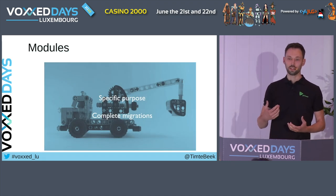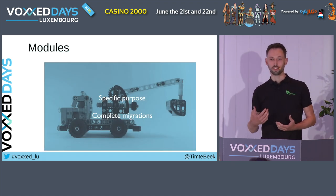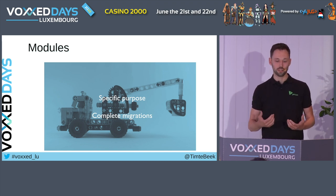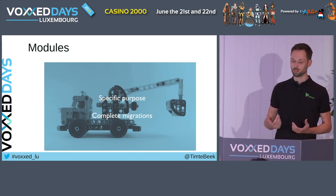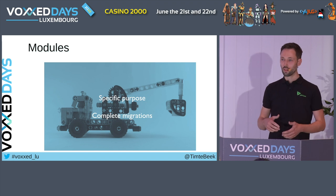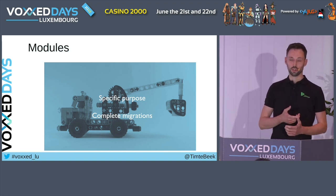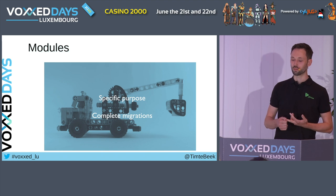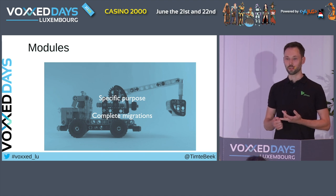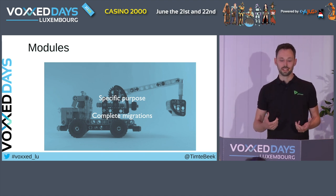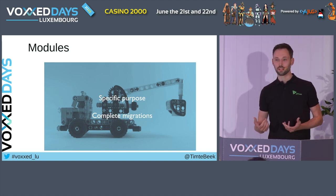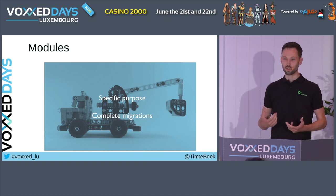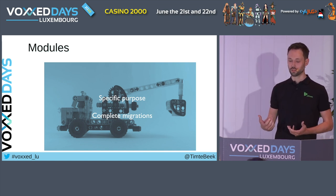Modules combine and group together these fine-grained recipes into more coarse-grained, application-specific recipes. There are modules, for example, for logging frameworks, testing frameworks, and application frameworks such as Spring. Think of these as LEGO sets with building plans for common migrations and fixes, ready to be used.